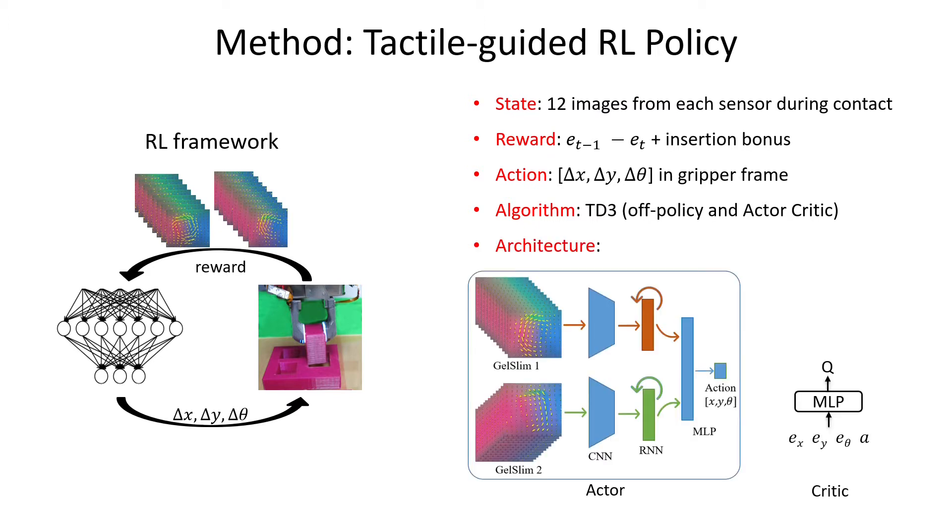The actor network includes a CNN plus RNN plus MLP model that takes the image sequence from the two sensors as the input and outputs the robot action. The critic takes the contact error and the action as the input and outputs the Q value.